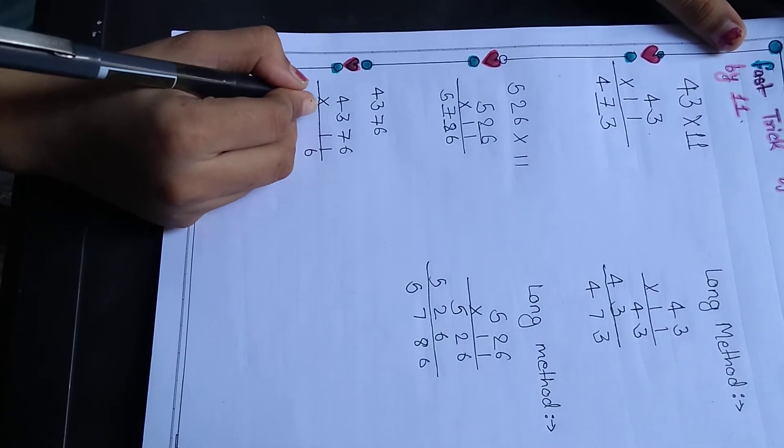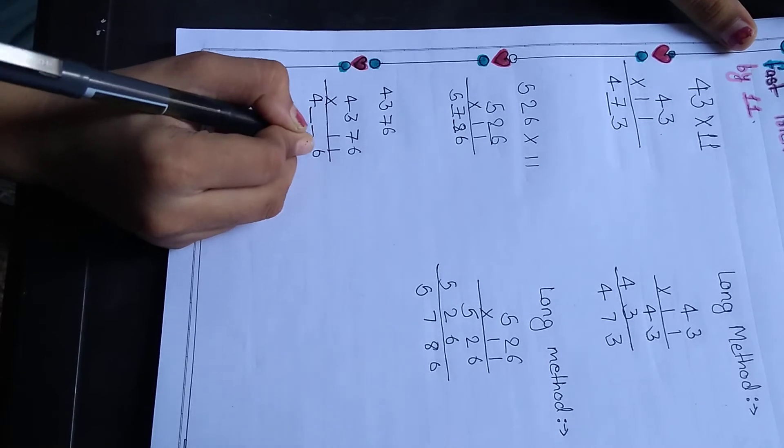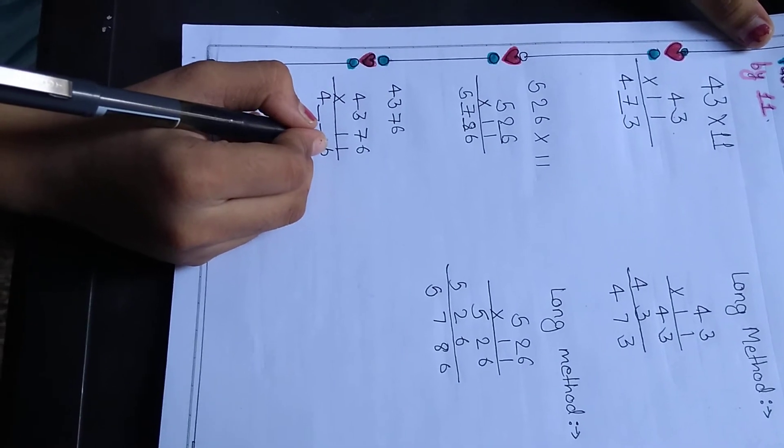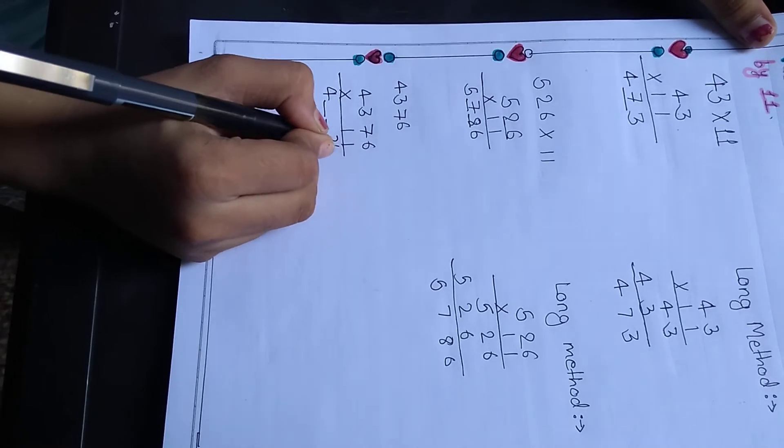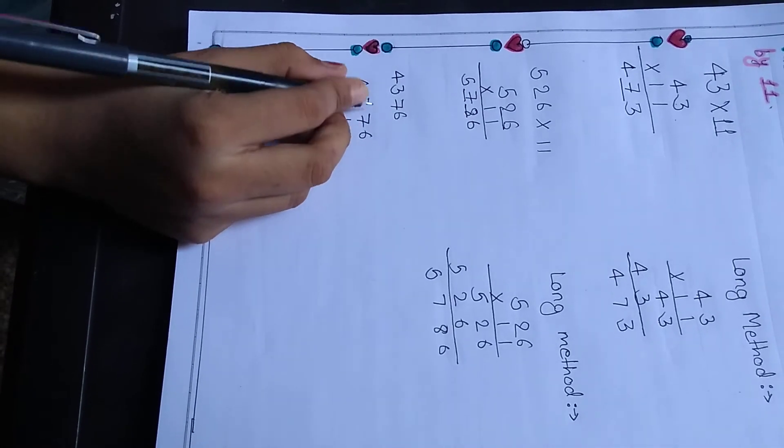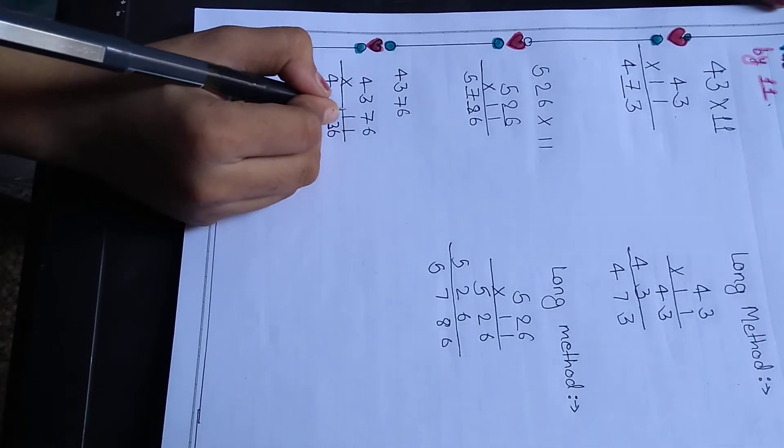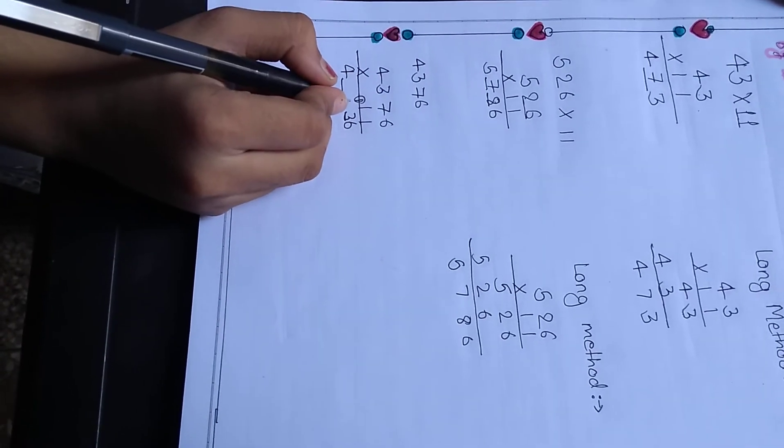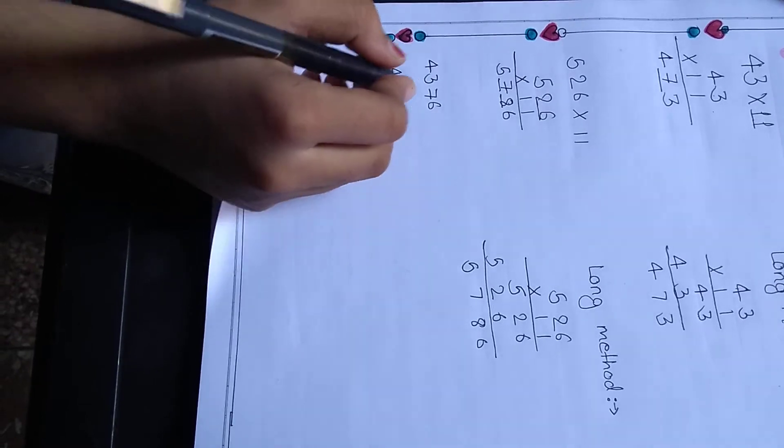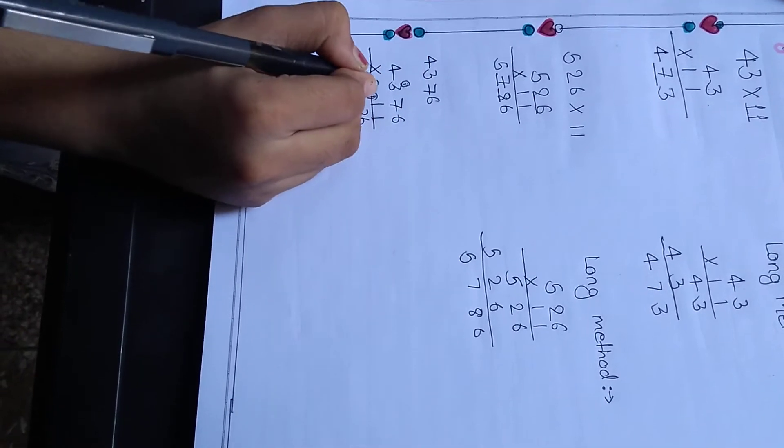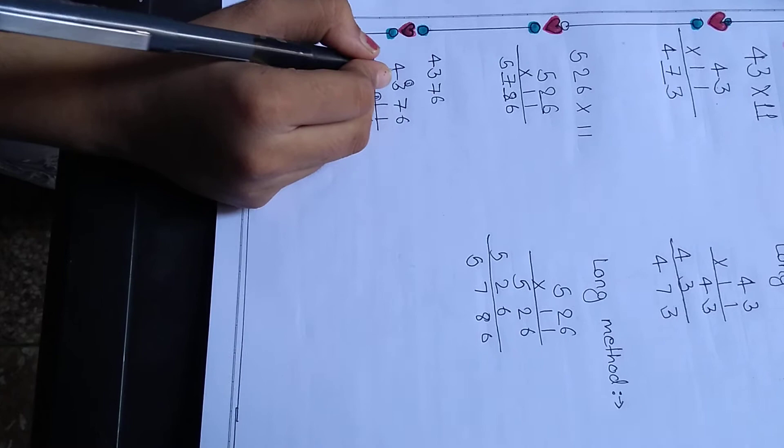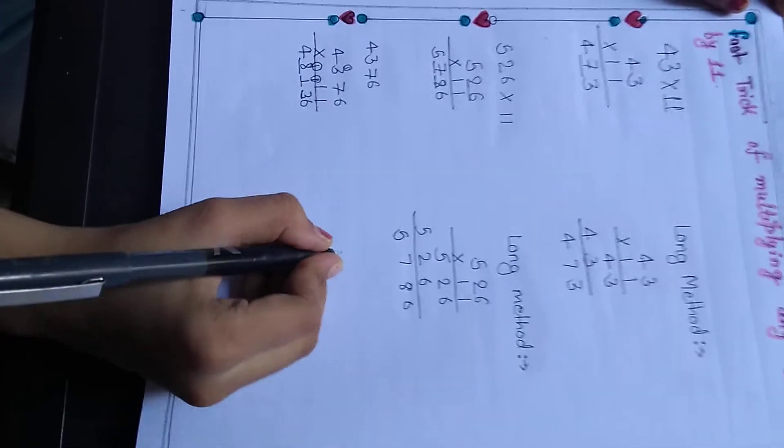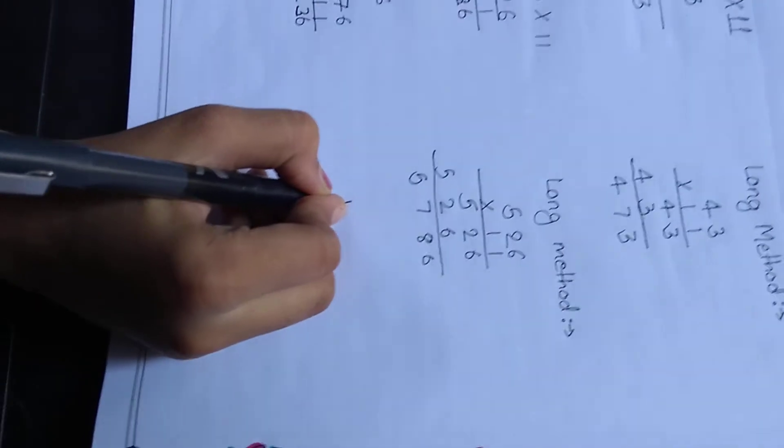4 and 6. We will have to have three gaps. So 6 plus 7 is equal to 13. So we will write 3, and 1 goes to this gap. 7 plus 3 is 10, and 10 plus 1 is 11. 1 also goes here to this gap. 3 and 4 is 7, plus 1 is 8. Now let us check it by the long method.